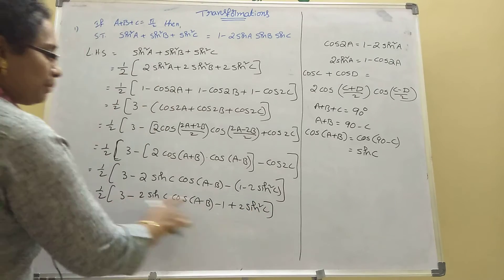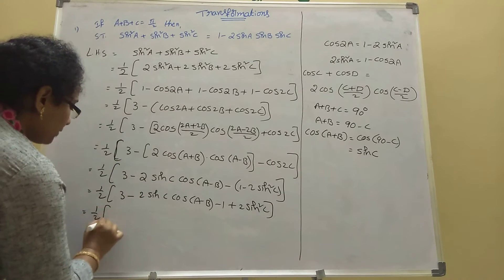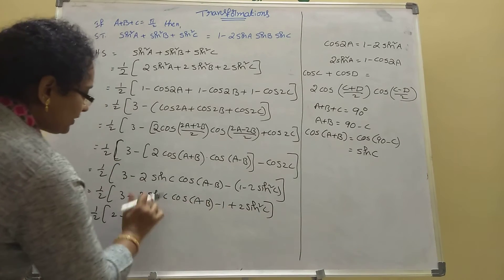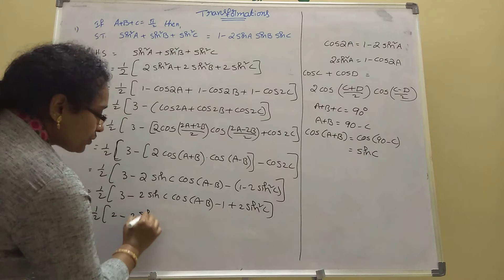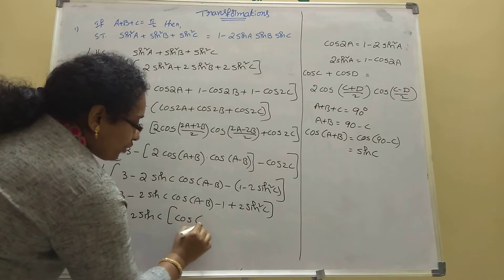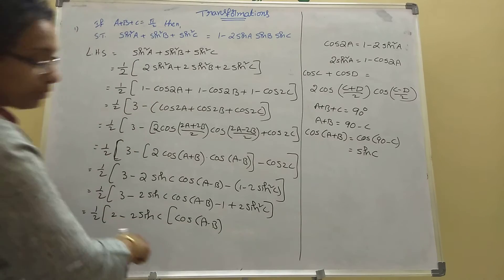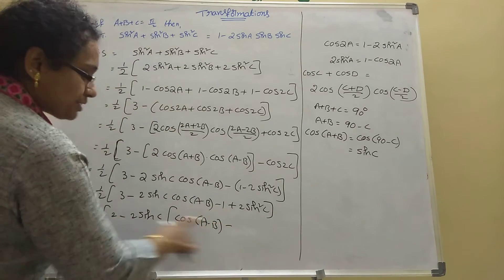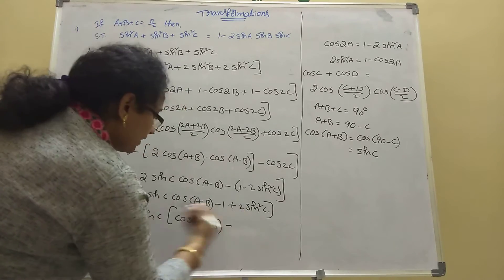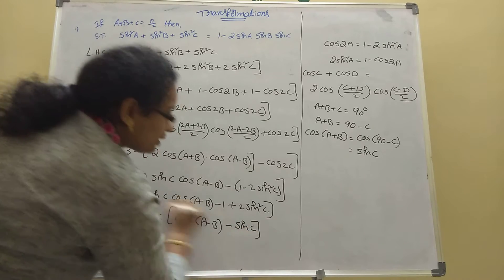So 3 minus 1 gives 2. Now take 2 sin C common from both remaining terms: remaining inside is cos(A minus B) and minus sin C. The minus sign with common gives: 1 by 2 times [2 minus 2 sin C (cos(A-B) minus sin C)].